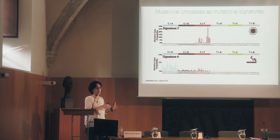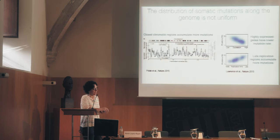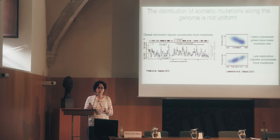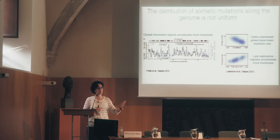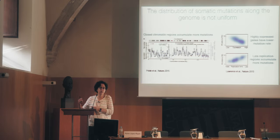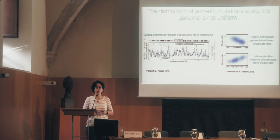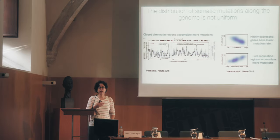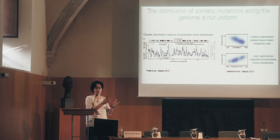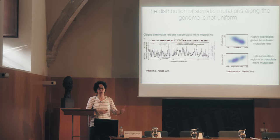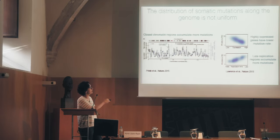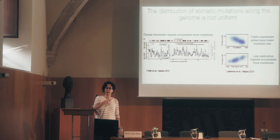There are a number of signatures that we don't know exactly what the origin is behind those. In addition to having different mutation types, when we look at the rate of mutations along the genome, they are not the same — some regions accumulate a high number of mutations, others accumulate much lower numbers. We are trying to understand what determines this rate along the genome. For example, depending on the accessibility and openness of the chromatin, there are more or less mutations. Genes that are highly expressed accumulate less mutations, and regions that replicate later accumulate more mutations.